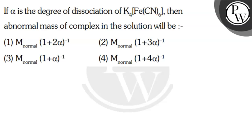The question says that if alpha is the degree of dissociation of K4[Fe(CN)6], then abnormal molar mass of complex in the solution will be. The options are: M_normal(1+2α)^-1 and option 2, M_normal(1+3α)^-1.